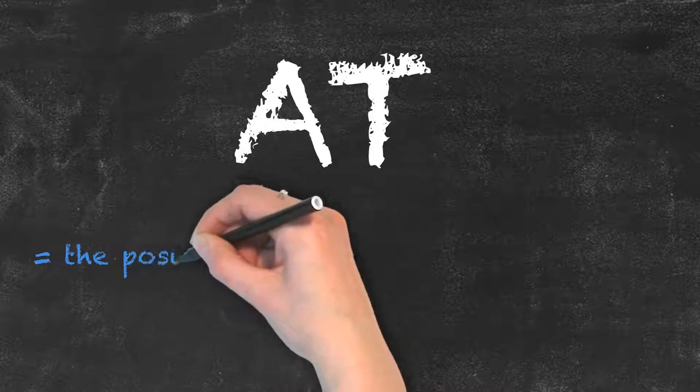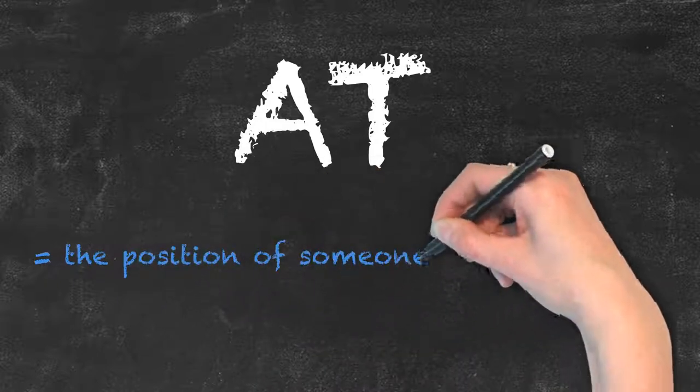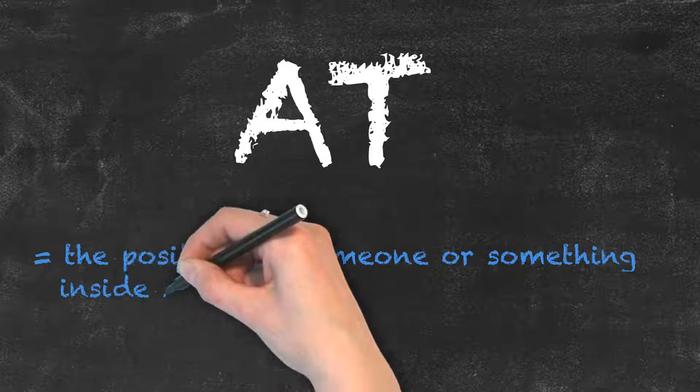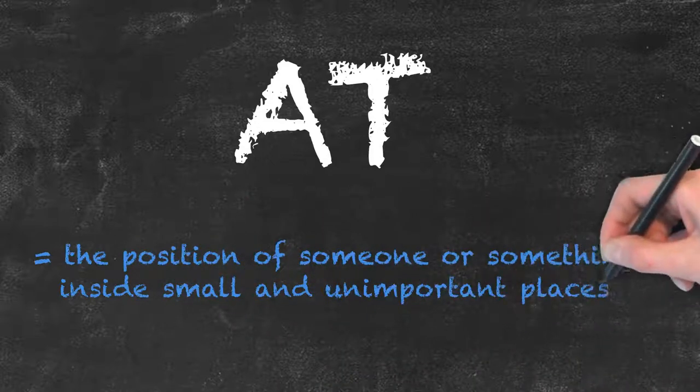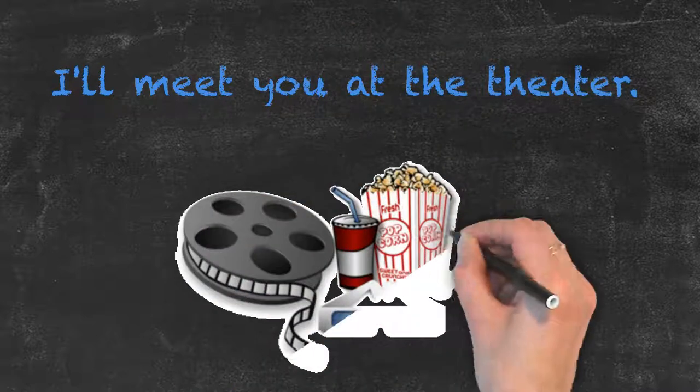At as a preposition of place is usually used to refer to the position of someone or something inside small and unimportant places such as villages or small towns. For example, I'll meet you at the theater.